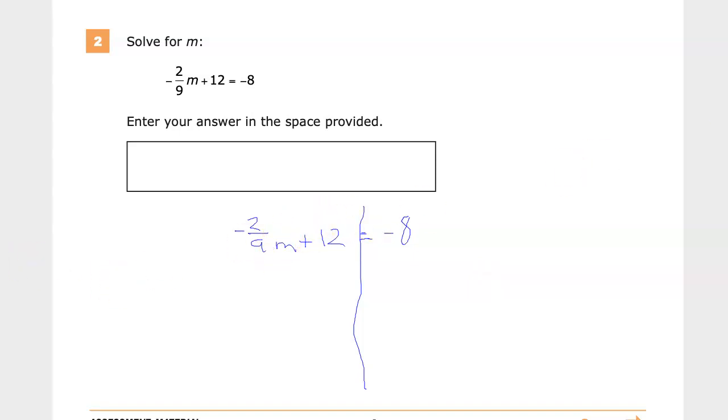So my goal is to get this variable by itself. It wants to be socially isolated, which seems appropriate for what's going on as I'm filming this. But in order to do that, I need to get rid of the two components that are with it. First, the coefficient, or not first, but one of them is the coefficient, and the other is this constant, so the 12.